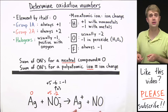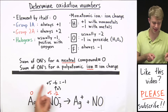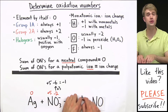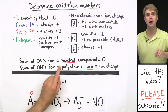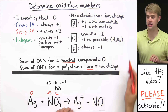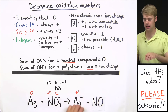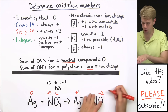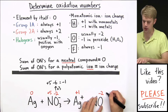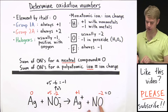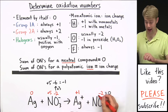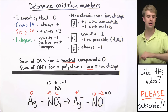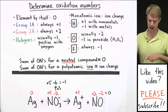Now let's look at oxidation numbers on the product side of the equation. They're not necessarily the same as on the reactant side, because oxidation numbers can change when the element is in different circumstances. Here, Ag now has a charge of plus one — it's become a monatomic ion — so its oxidation number is the same as its ion charge: plus one. For NO, oxygen's oxidation number is minus two. Since NO is a neutral compound, the oxidation numbers must add to zero, so nitrogen's oxidation number must be plus two: plus two minus two equals zero.